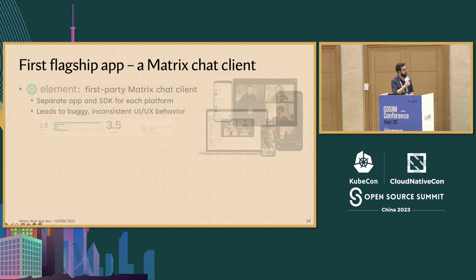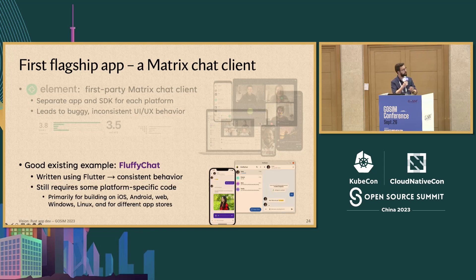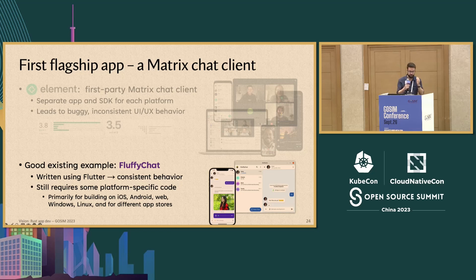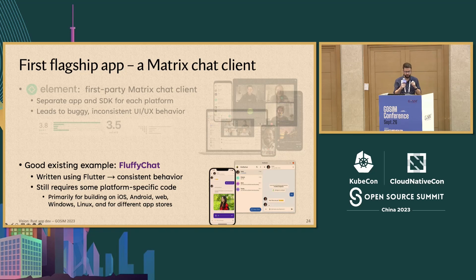One such idea for a flagship app — probably no surprise — something like a Matrix chat client. A good existing example would be Element, but a better one would be something like Fluffy Chat, a cute Matrix chat client written in Flutter. The key point is it has very consistent behavior because of the underlying framework. It still requires some platform-specific code, and I think that's okay. But it has a very nice set of underlying primitives thanks to Flutter, and offers features like accessing multimedia, a camera, a microphone, video chat, and handling persistent state.